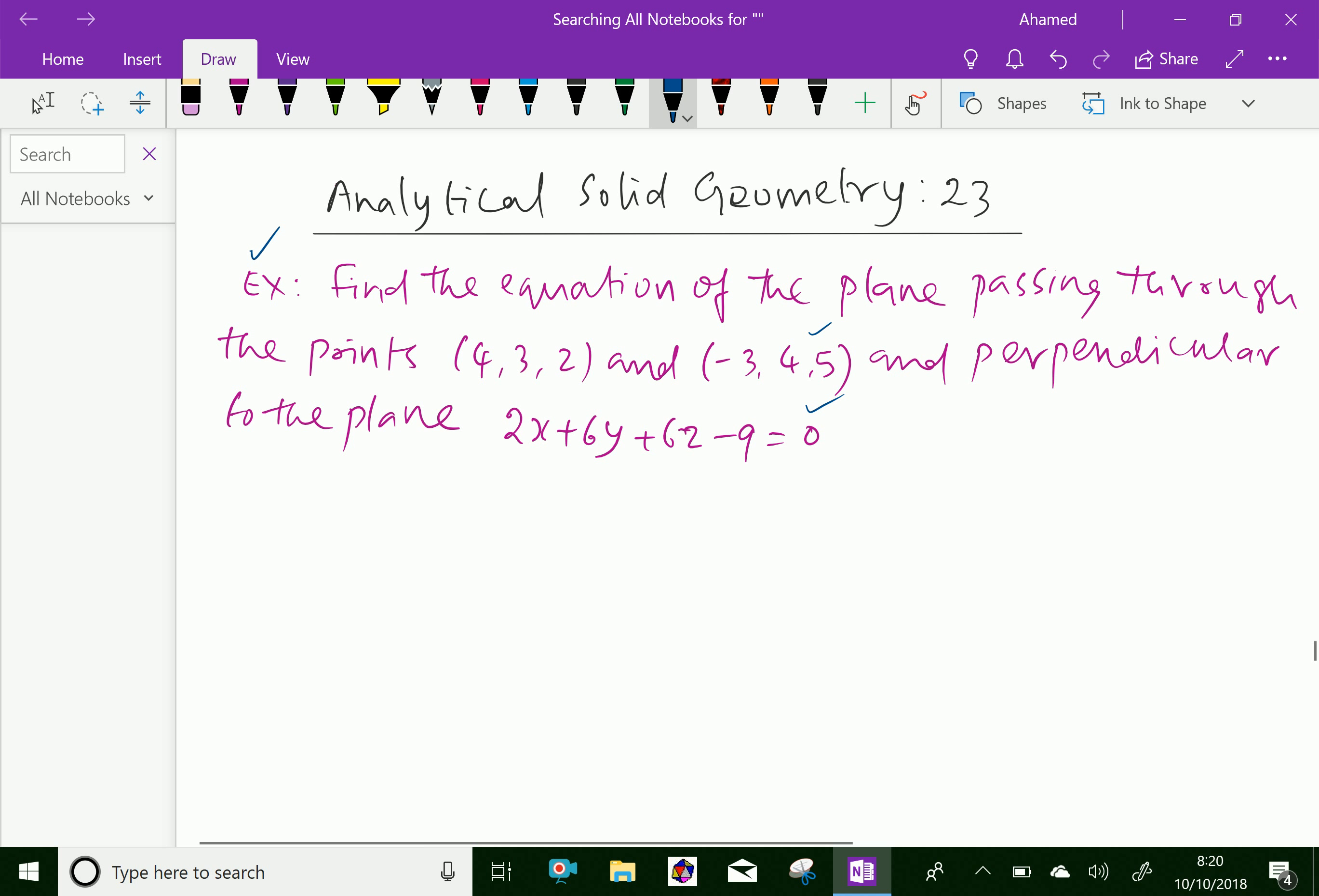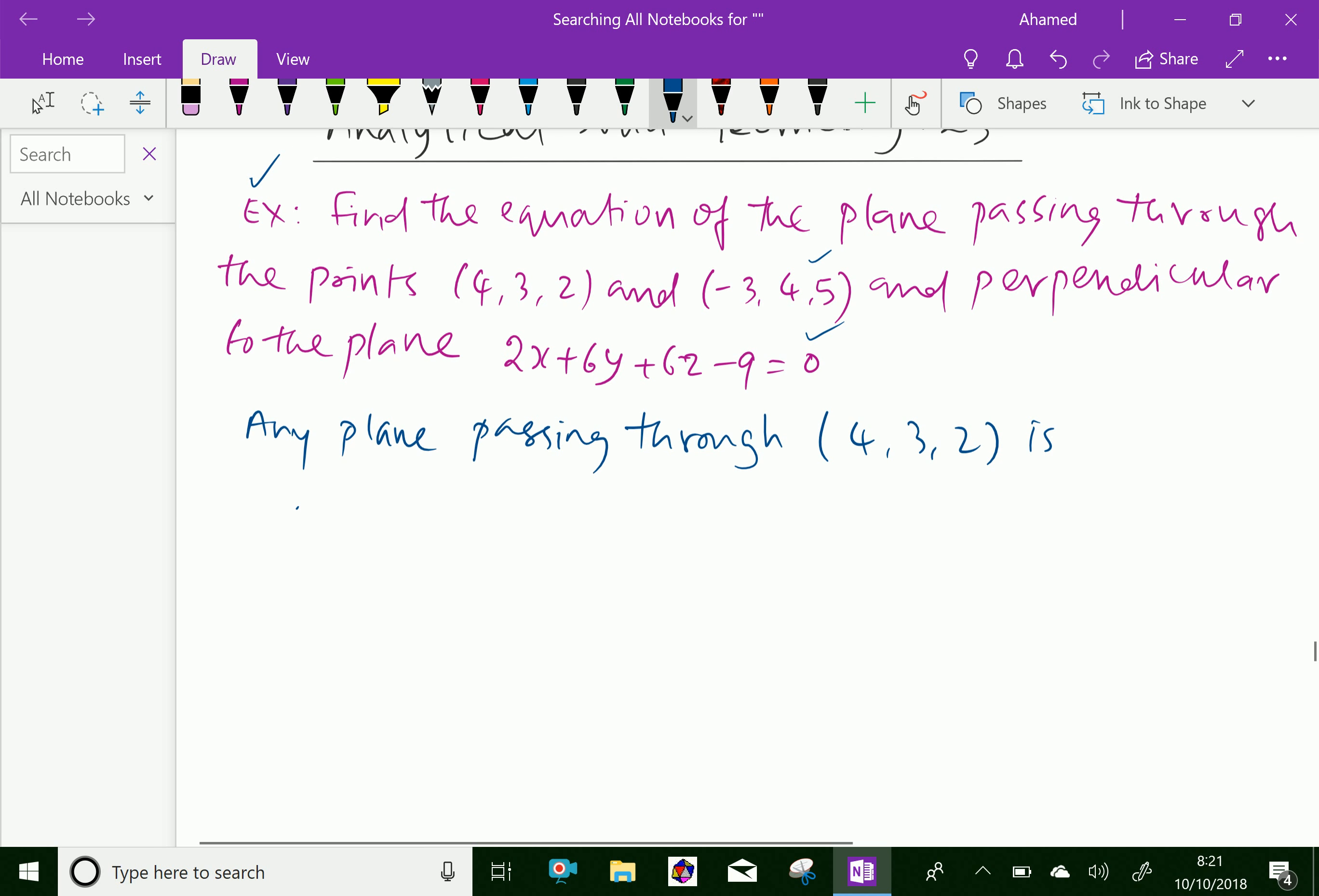Now any plane passing through the point (4, 3, 2) is A(x - 4) + B(y - 3) + C(z - 2) = 0.